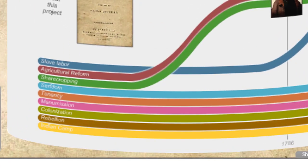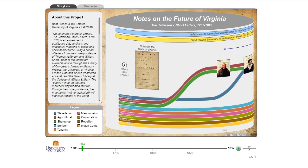Scott French and I came up with a series of topics like slave labor, agricultural reform, sharecropping, et cetera. Scott went through the letters between the two men and mapped them over time and then coded them for these particular items, and we put it onto a timeline.